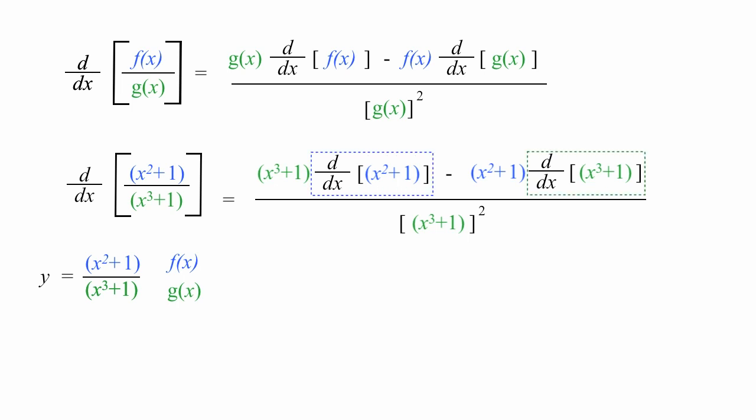So now I'm going to take x cubed plus 1 times the derivative of x squared plus 1. Using the power rule, x squared, the derivative of x squared is 2 times x to the first power, and the derivative of a constant is 0. Now I subtract x squared plus 1 times the derivative of x cubed plus 1. The derivative of x cubed is 3 times x squared, or 3x squared, and the derivative of a constant is 0.